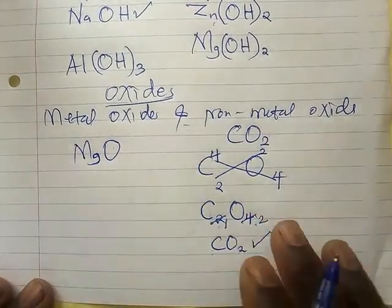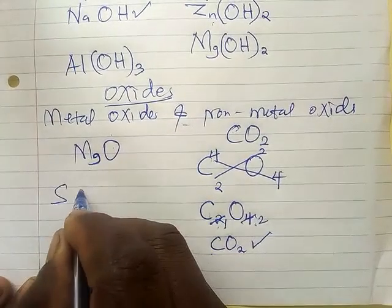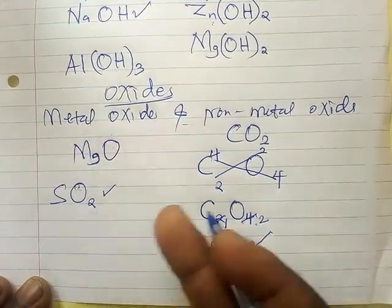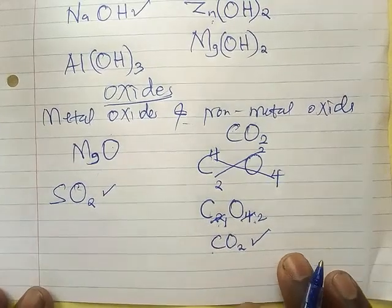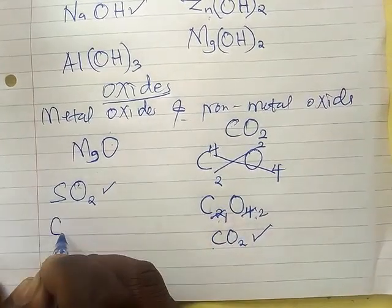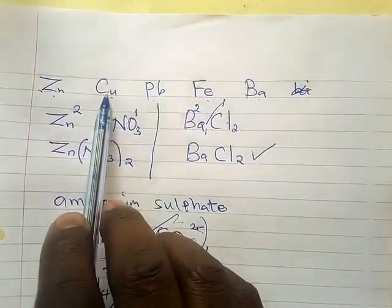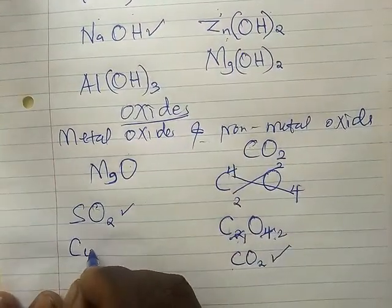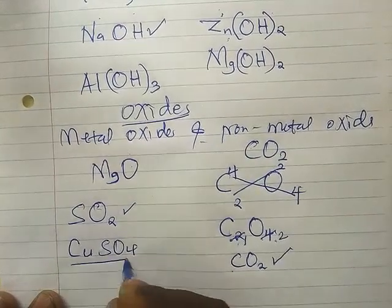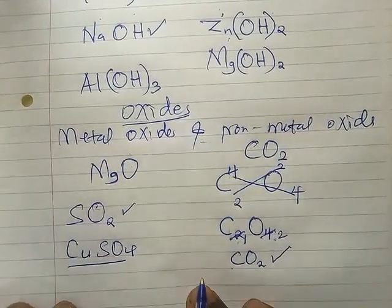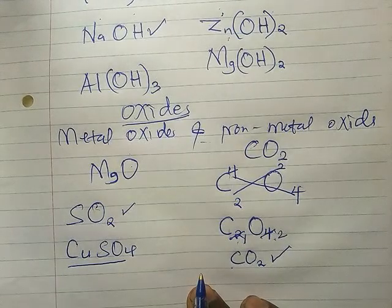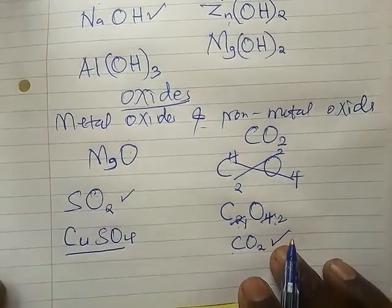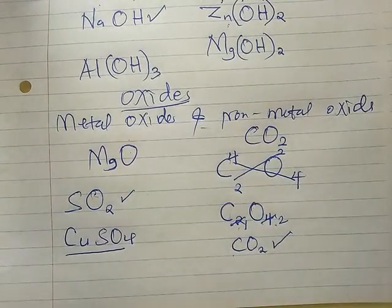Sulfur dioxide: sulfur has valency four and oxygen has valency two, giving SO2 — also called sulfur(IV) oxide or sulfur dioxide. Copper is not in the first 20 elements so its valency is two. Copper sulfate is CuSO4, copper nitrate is Cu(NO3)2, copper carbonate, copper chloride — all follow the same method. So long as you know the valency of the metal, writing a chemical formula is very easy.